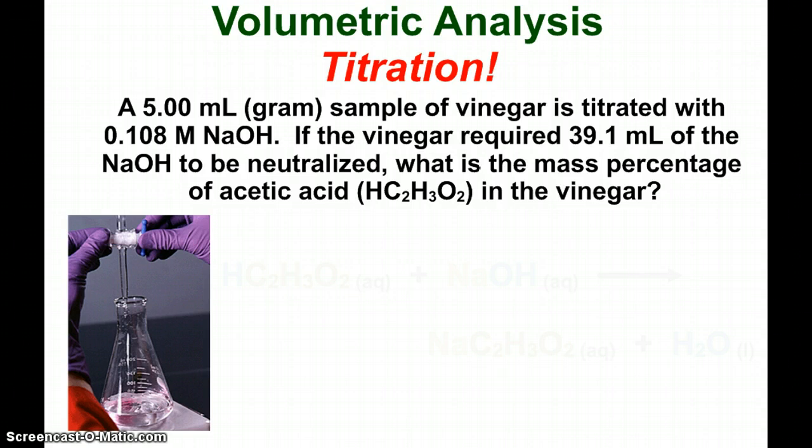And that's because the density of vinegar is pretty much just like water. So 1 milliliter of vinegar is approximately 1 gram, so we're just going to say whatever volume of vinegar we use that's the mass of the vinegar. So here we're titrating with a 0.108 molar solution of sodium hydroxide. In order to reach the end point of the titration it took 39.1 milliliters of that sodium hydroxide.